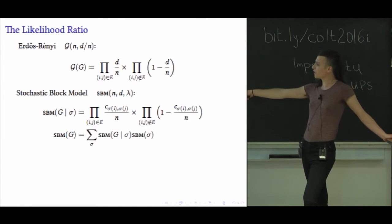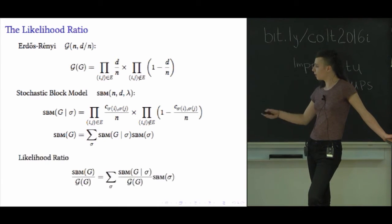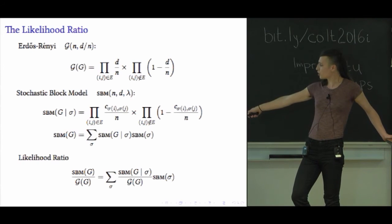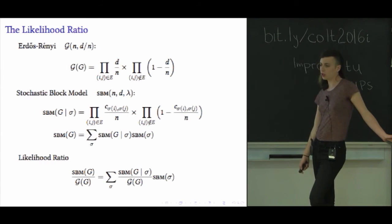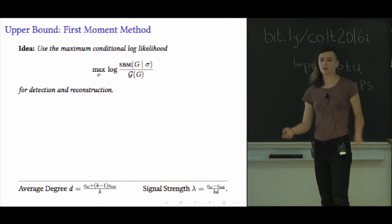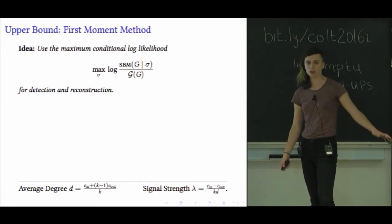Similarly, if I show you a graph and want to know the probability it came from the block model, conditioned on having been generated with a particular partition sigma, this is also a product over all the edges of the edge probabilities times a product over all the non-edges of the non-edge probabilities. Only now each of these probabilities depends on what that partition sigma thinks about the types of the two endpoints of each edge or non-edge. Then by Bayes' rule to get the total probability of the graph G, we take a sum over all these conditional probabilities weighted by the prior probability of each partition. The likelihood ratio is just the ratio of the probability that the graph came from this structured model divided by the probability it came from the null model where there's no structure. This is a sum over all the conditional likelihood ratios, each weighted by the prior probability of the partition.